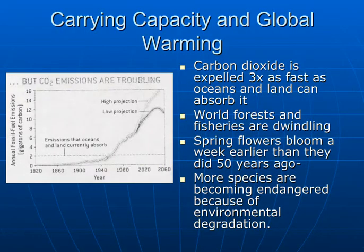Along with carrying capacity, we have global warming, which is a serious factor. These CO2 emissions are very troubling. Carbon dioxide is now expelled three times as fast as oceans and land can absorb it. World forests and fisheries are dwindling — half the world's original forest cover is gone, and another 30% is degraded or fragmented. In the past 50 years, industrial fleets have fished out at least 90% of all large ocean predators, such as tuna, cod, and flounder. More and more species are becoming endangered because of environmental degradation.